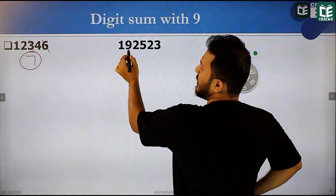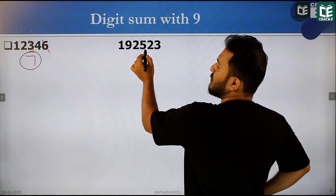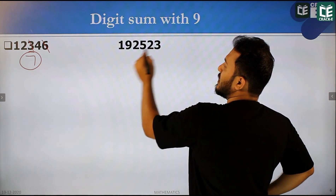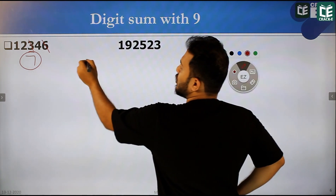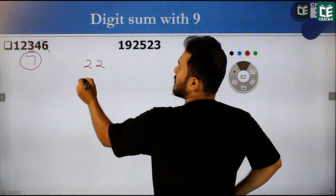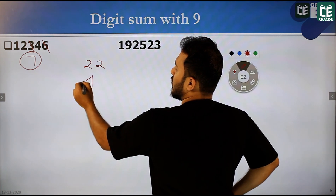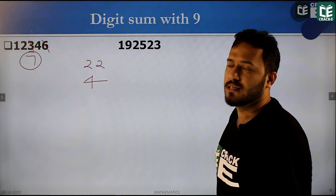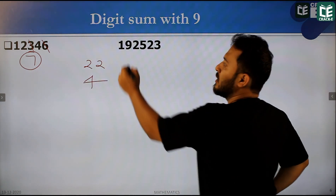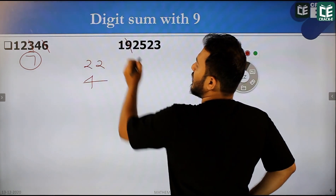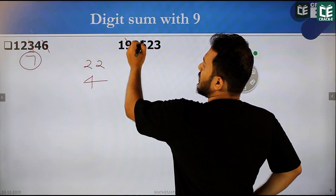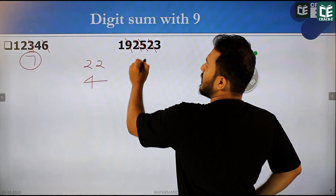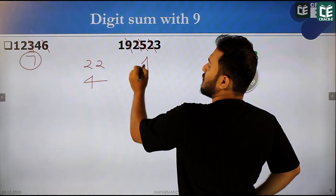1 plus 9 is 10, 10 plus 2 is 12, 12 plus 5 is 17, 17 plus 2 is 19, 19 plus 3 is 22. The digit sum is 4. If we eliminate 9, we sum it. 5 plus 2 plus 2 — eliminate it. Ultimately, the digit sum is 4.